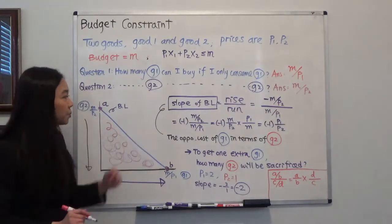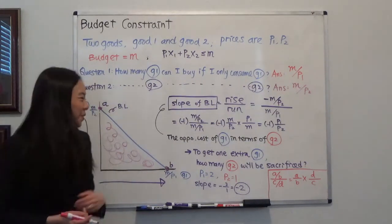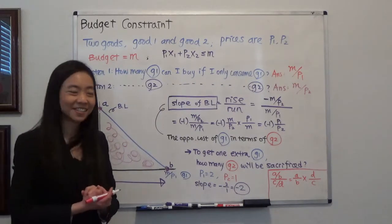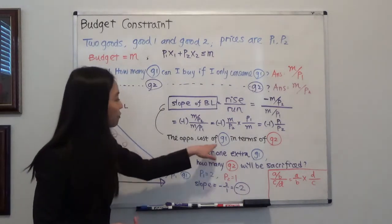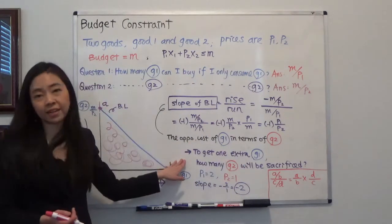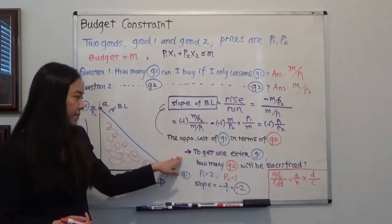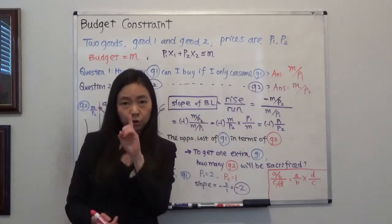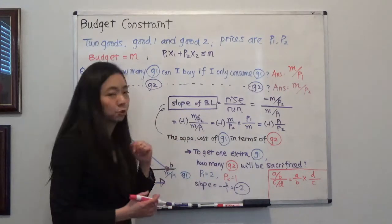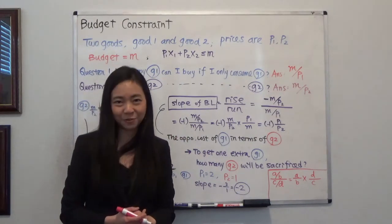The slope of the budget line has a meaning. The slope of the budget line is actually the opportunity cost of good one in terms of good two. Using plain English, it will be like this: in order to get one extra unit of good one, how many units of good two do I have to sacrifice?